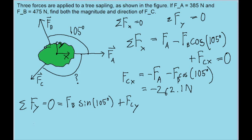So once again, we're going to algebraically rewrite this to solve for f c y. And this is going to be equal to the negative of f b sine 105 degrees. And if we put that into our calculator, then we find that this has a component of about 458.8 newtons.